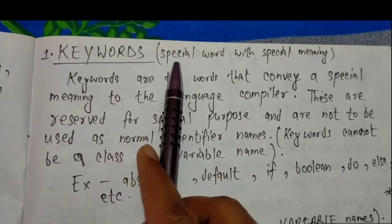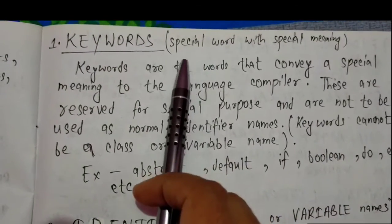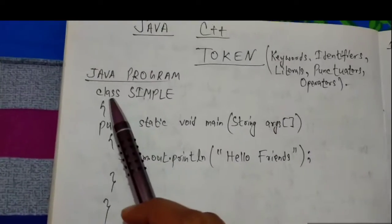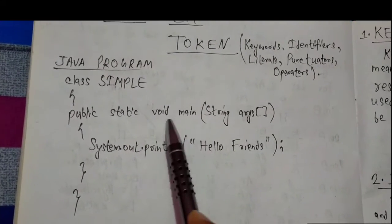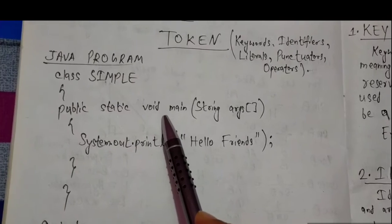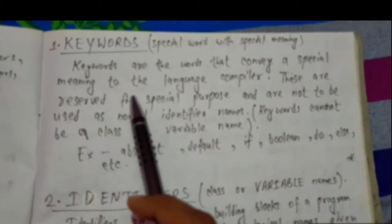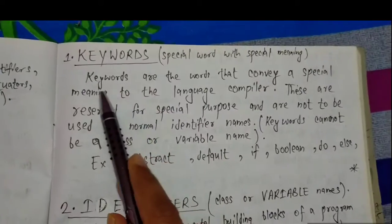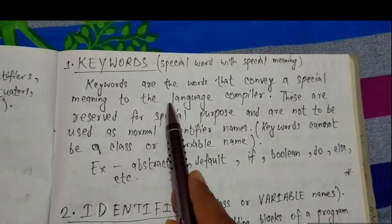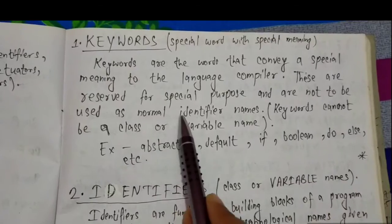Keywords are special words with special meanings. As we see in the example program, class, public, static, void, main - every word has a special meaning in the programming language whether it is Java or C++. Keywords are words that convey a special meaning to the programming compiler. These are reserved for special purpose and are not to be used for normal identifiers.